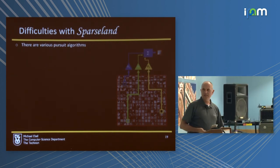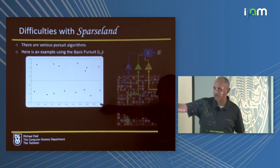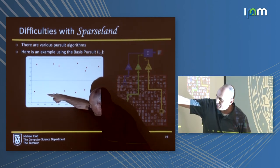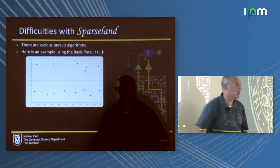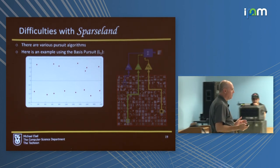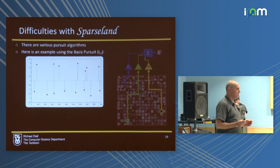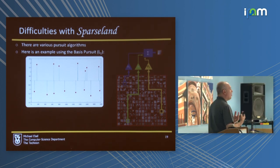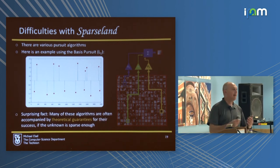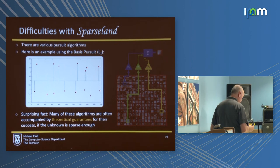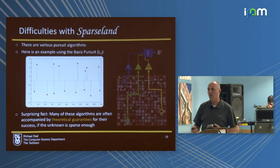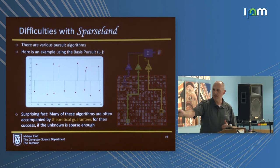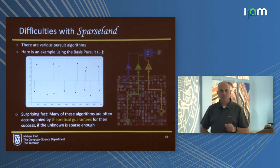We were describing difficulties. Remember our problem: 2,000 atoms, 15 of them turned on. We run basis pursuit — L1. Perfect solution. Is this a coincidence? No. In fact, and this is one of the amazing things in this field, there are theoretical guarantees that tell us this is going to work under some conditions: conditions on the properties of the dictionary and on the sparsity of the unknown. So if your representation is sparse enough and your dictionary is well-behaved, things will be quite good.